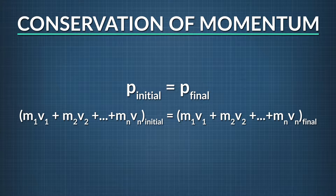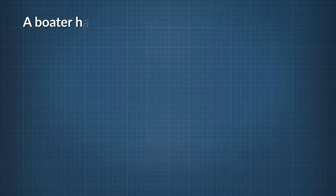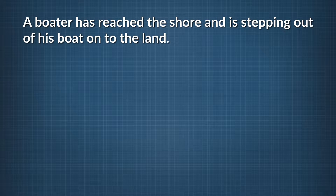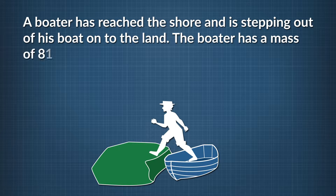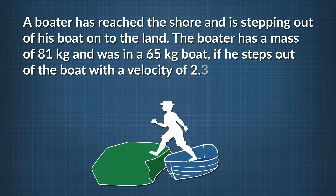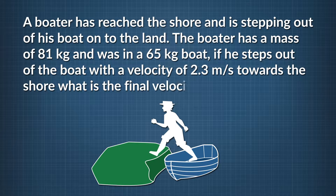Here's an example of a problem in which the conservation of momentum can be used to calculate the final velocity of an object after an interaction with another object. Suppose a boater has reached the shore and is stepping out of his boat onto the land. The boater has a mass of 81 kg and was in a 65 kg boat. If he steps out of the boat with a velocity of 2.3 m/s towards the shore, what is the final velocity of the boat?